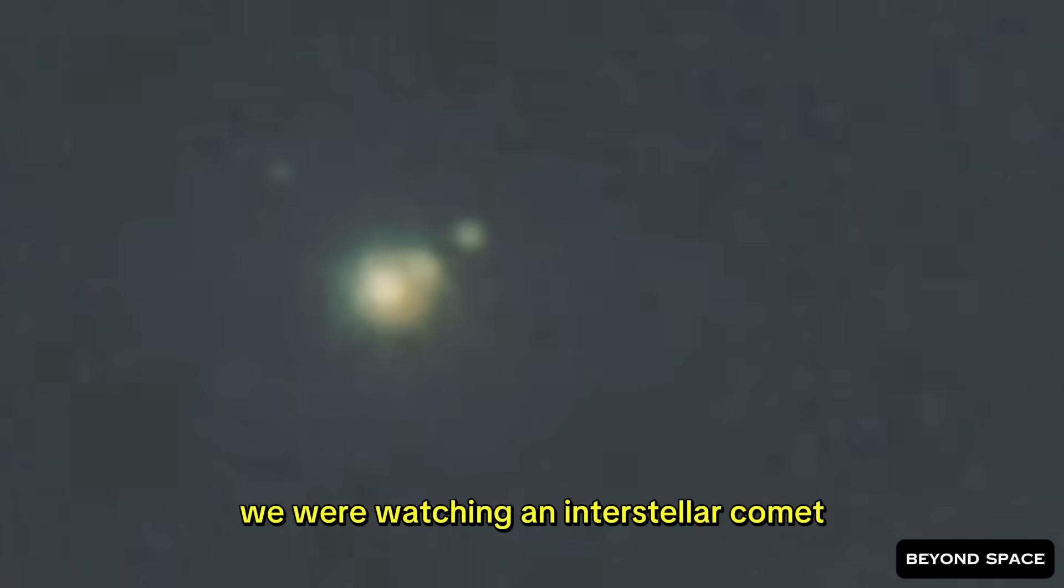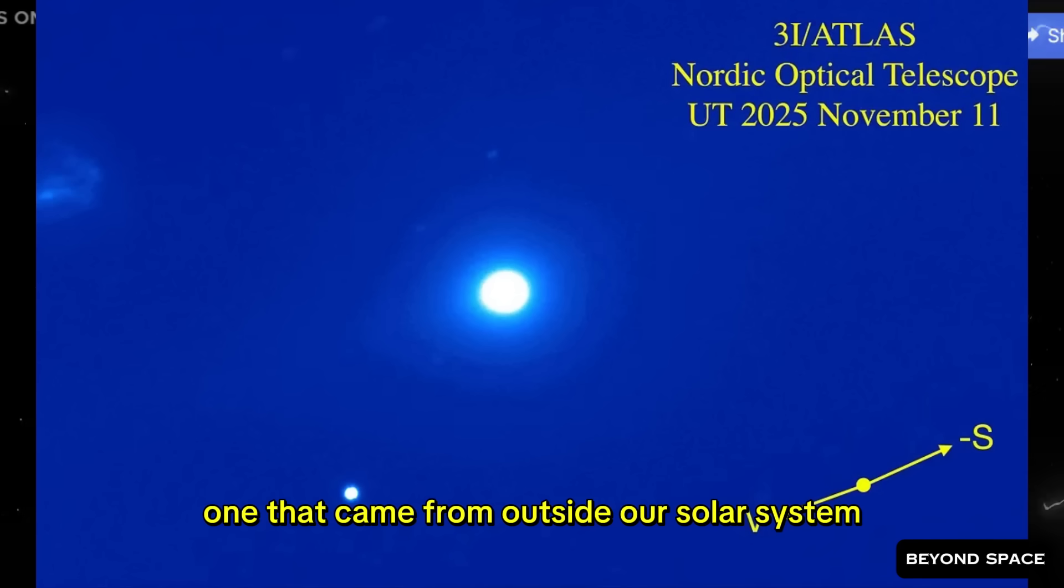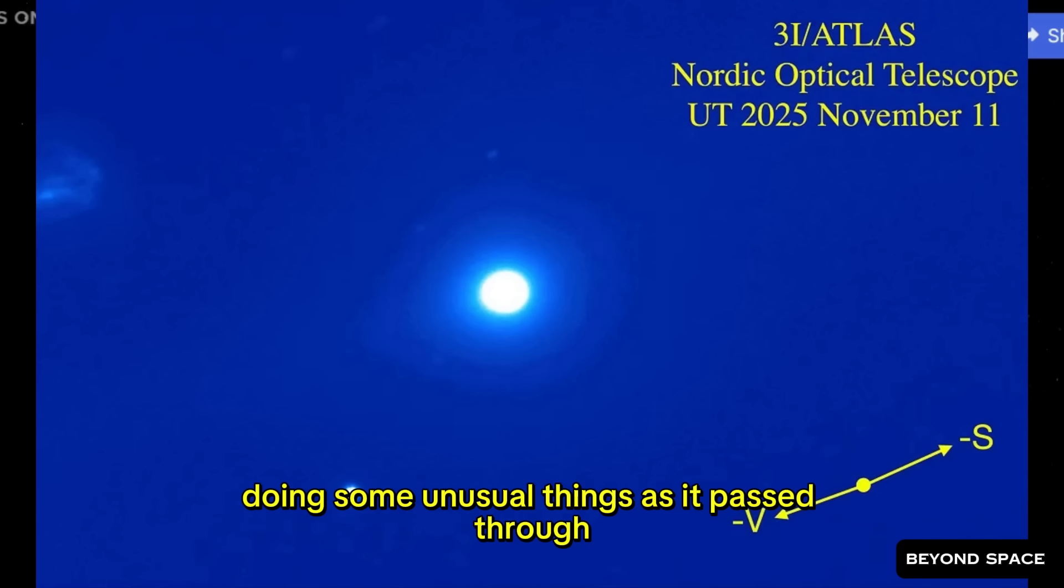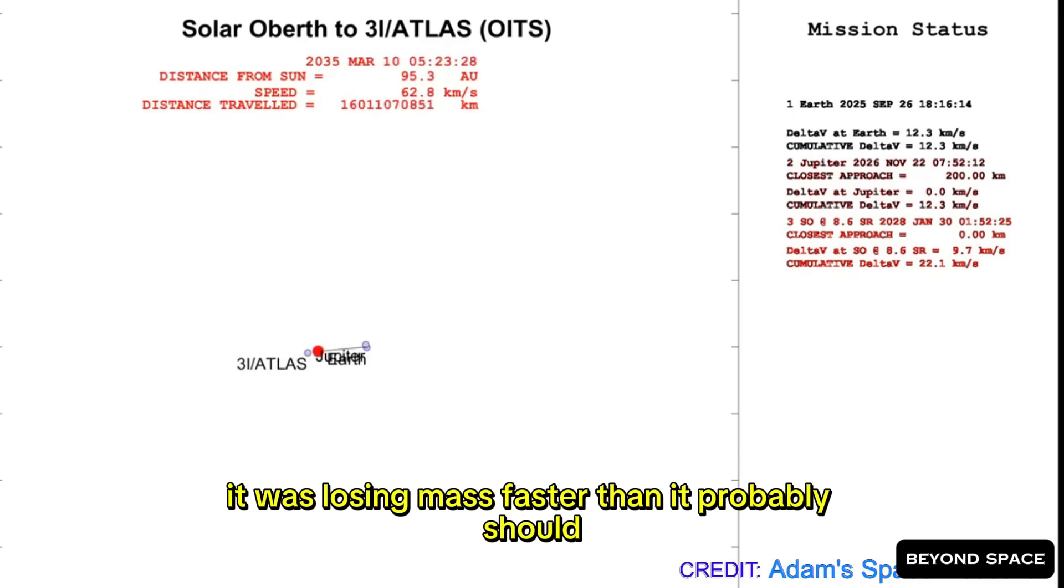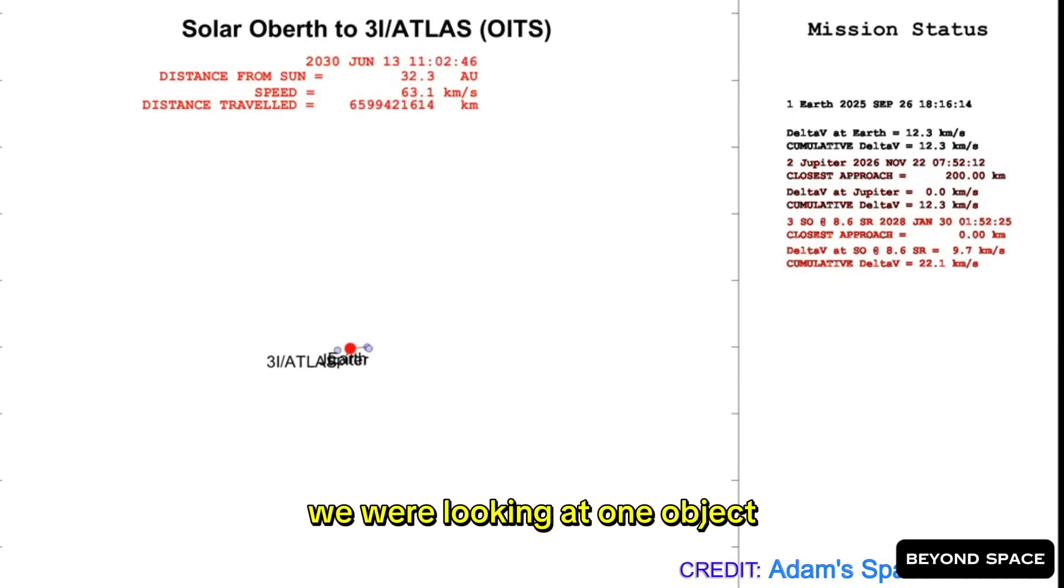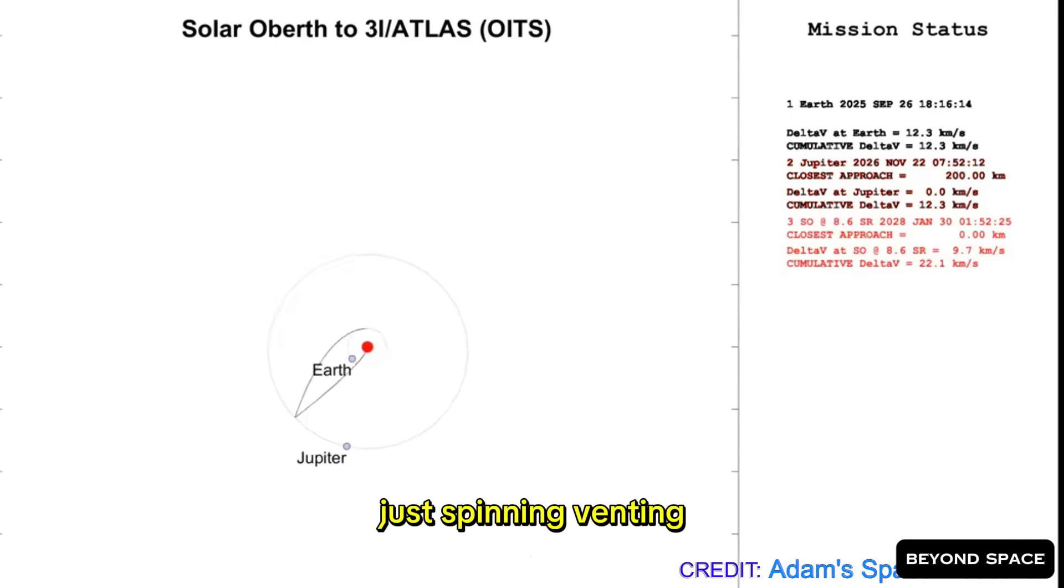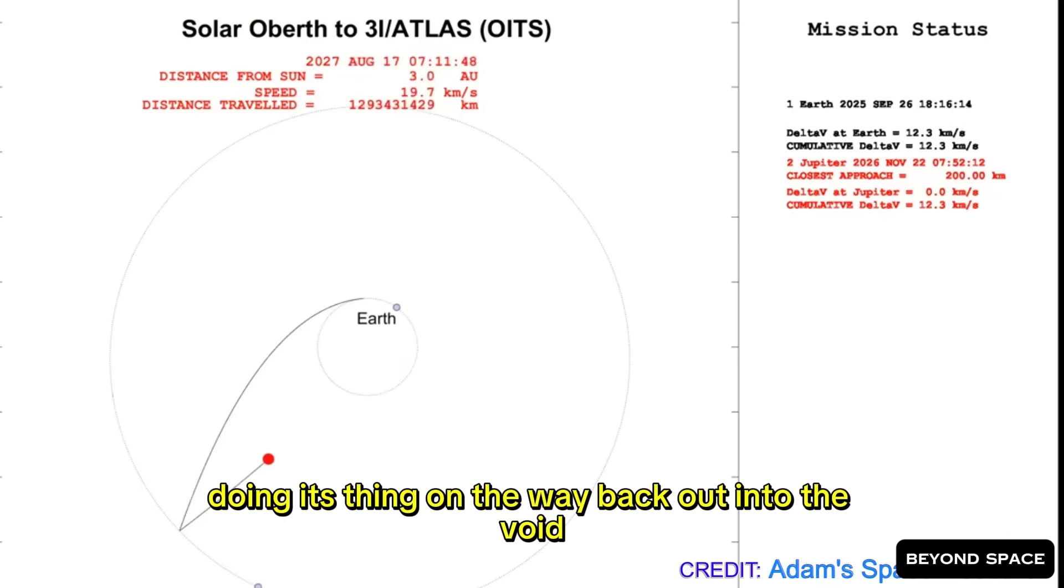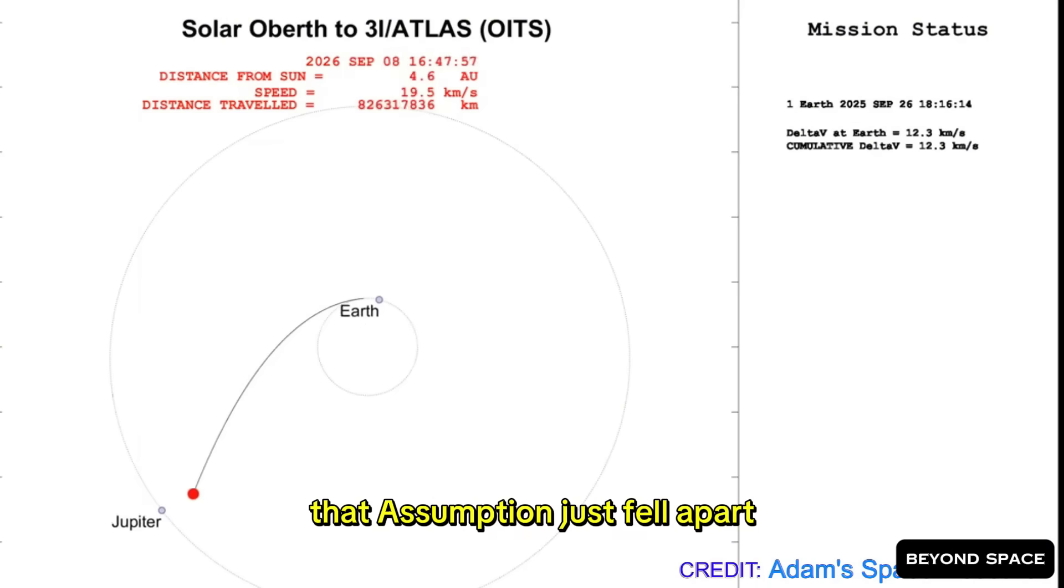We were watching an interstellar comet, one that came from outside our solar system, doing some unusual things as it passed through. It was bright, it was active, it was losing mass faster than it probably should. But at its core, the assumption was solid. We were looking at one object, one nucleus, one comet, just spinning, venting, doing its thing on the way back out into the void. That assumption just fell apart.